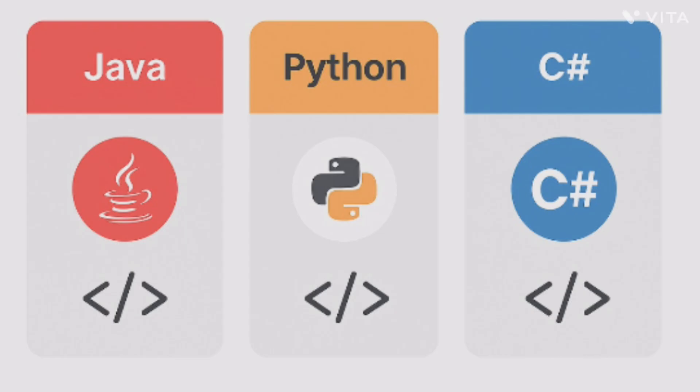Along with coding there are additional sections: in the Java cluster you get two SQL questions plus one web page task. In the Python cluster you get two SQL questions plus 10 cloud-based MCQs. In the C# cluster you get two SQL questions plus one web-based task.